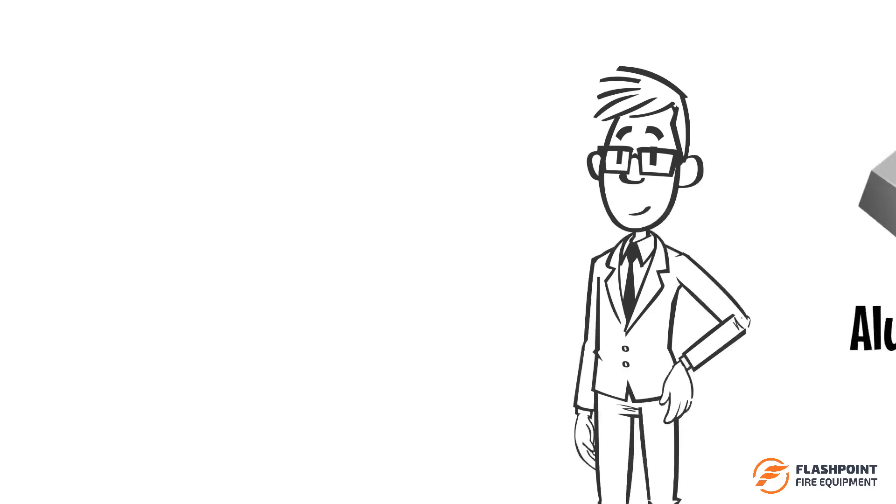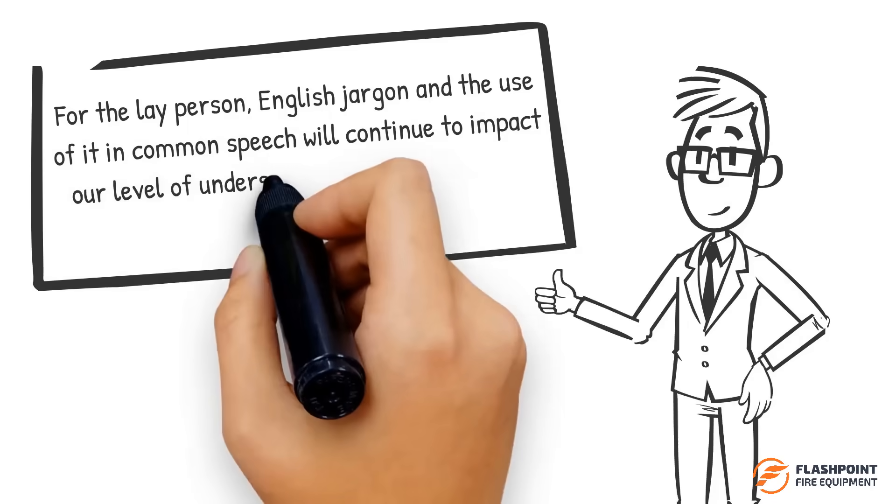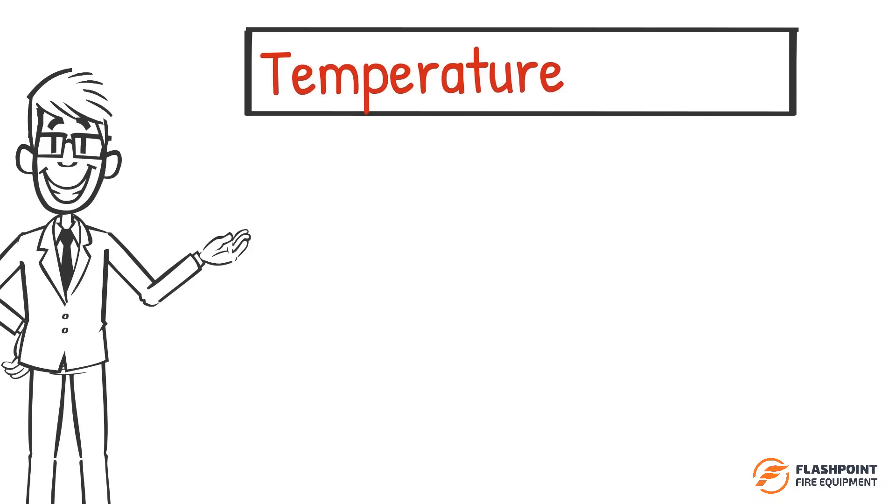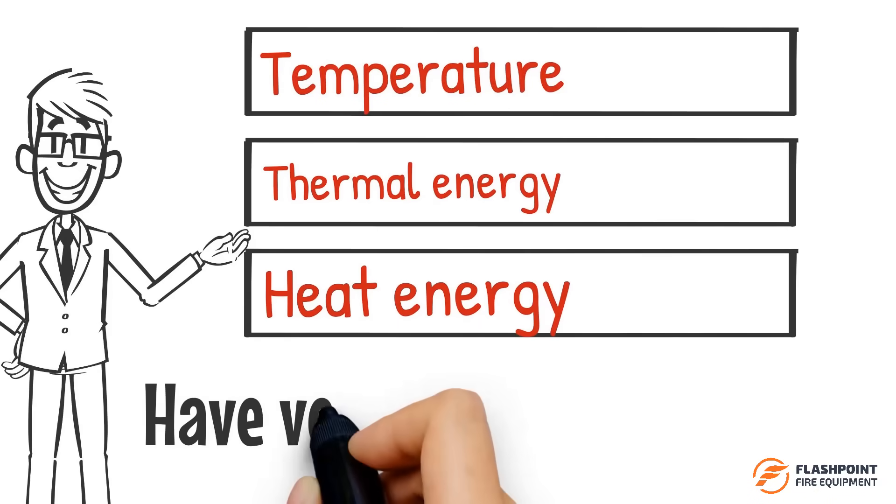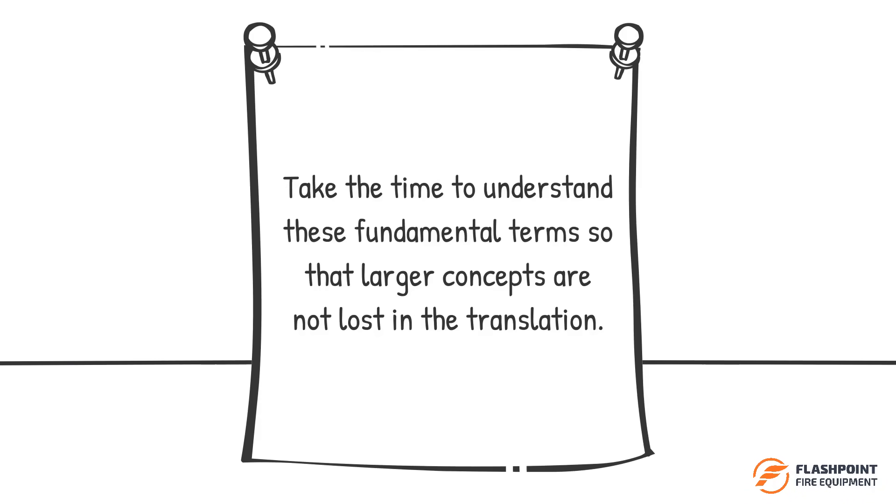This process produces the sensation that the aluminum block is actually at a lower temperature than the book, which is not the case. For the layperson, English jargon and the use of it in common speech will continue to impact our level of understanding when it comes to physics and chemistry. Temperature, thermal energy, and heat energy have very specific meanings. Take the time to understand these fundamental terms so that larger concepts are not lost in the translation.